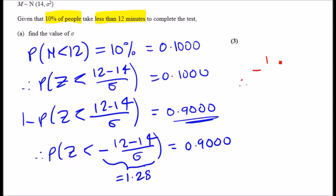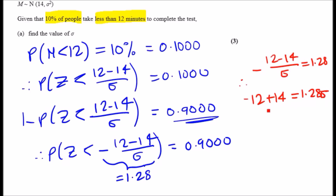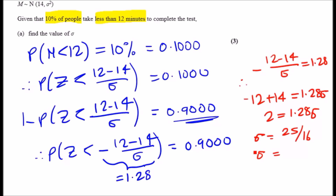Solving for σ: −(12 − 14)/σ = 1.28. Multiplying σ across and applying the negative: −12 + 14 = 1.28σ, which gives 2 = 1.28σ. Dividing by 1.28: σ = 25/16, or as a decimal, σ ≈ 1.5625 minutes.